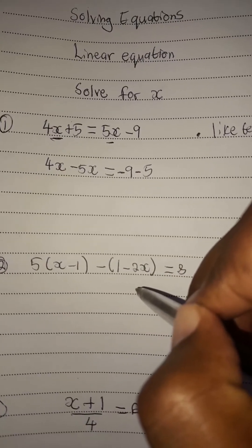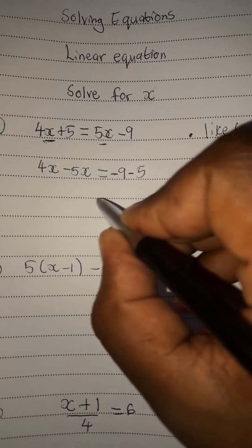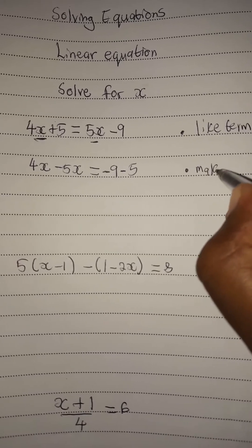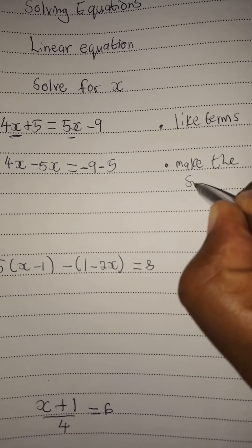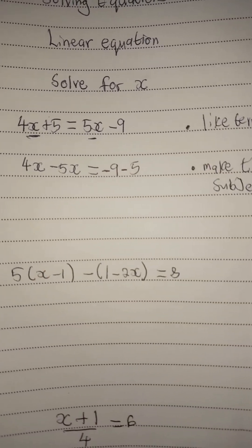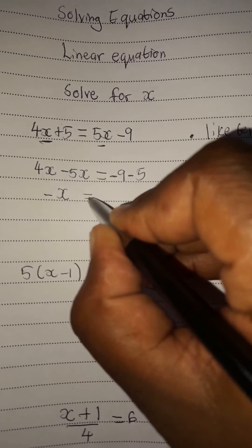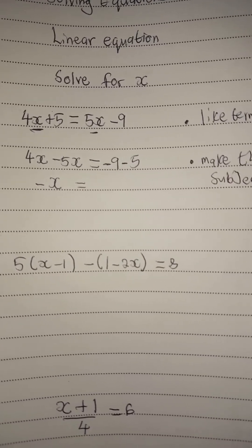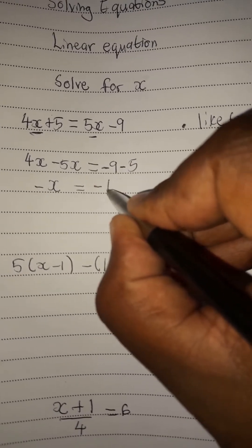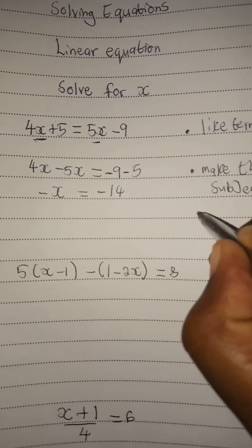So we have already collected the like terms. After collecting the like terms, we need to make x the subject. From here, what is 4x minus 5x? That's minus x or minus 1x. What is negative 9 minus 5? Those are integers, so it should be minus 14. So it will be minus 14. You can divide both sides from there. Since we have made x the subject, you then solve for x.